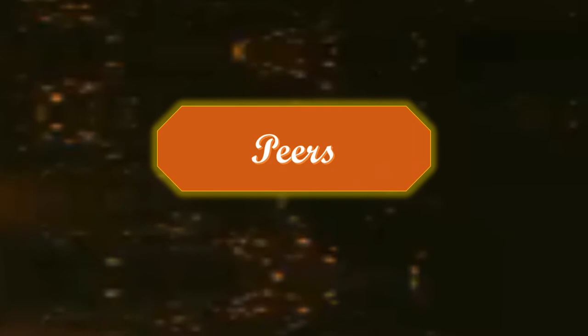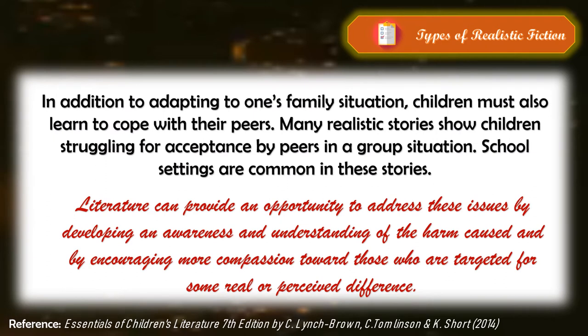Peers. In addition to adapting to one's family situation, children must also learn to cope with their peers. Many realistic stories show children struggling for acceptance by peers in a group situation. School settings are common in these stories. Examples include Just Grace by Charise M. Harper and Fame and Glory in Freedom, Georgia by Barbara O'Connor. Bullying by peers can be damaging to the self-esteem of those targeted. Angry outbursts by those being humiliated are not infrequent and at times can be frightening. Literature can provide an opportunity to address these issues by developing an awareness and understanding of the harm caused by bullying and by encouraging more compassion towards those who are targeted for some real or perceived difference.